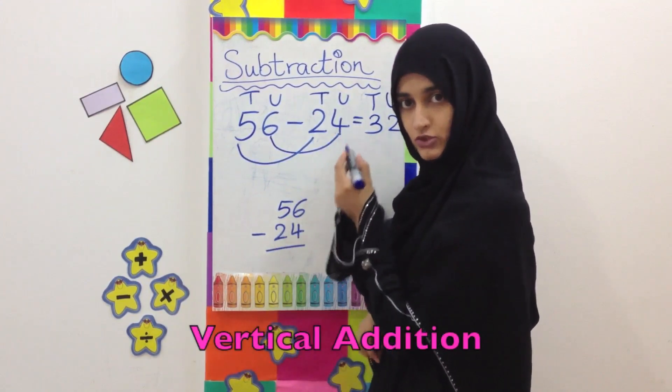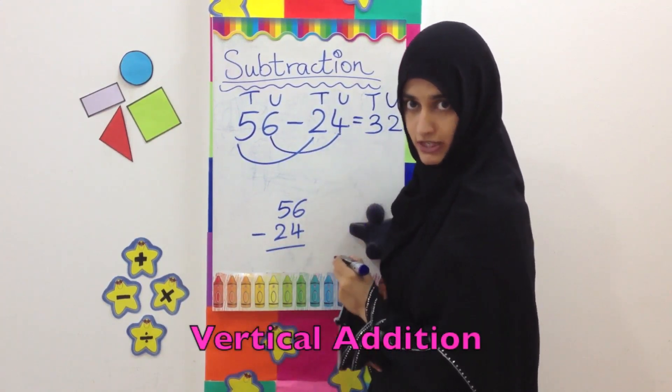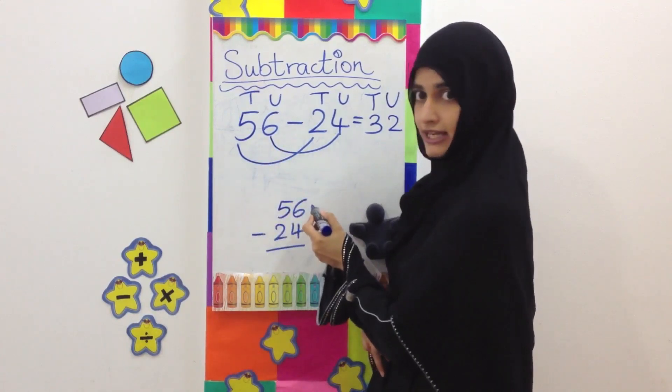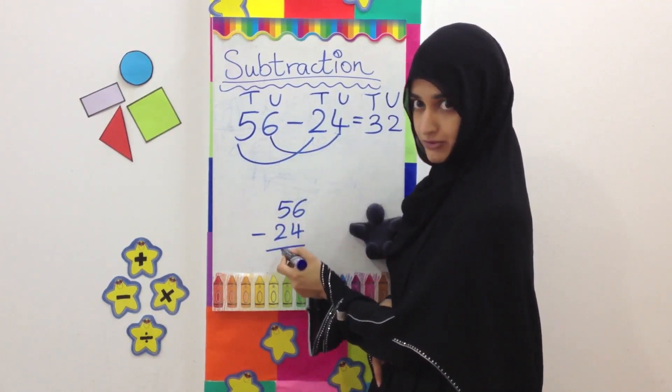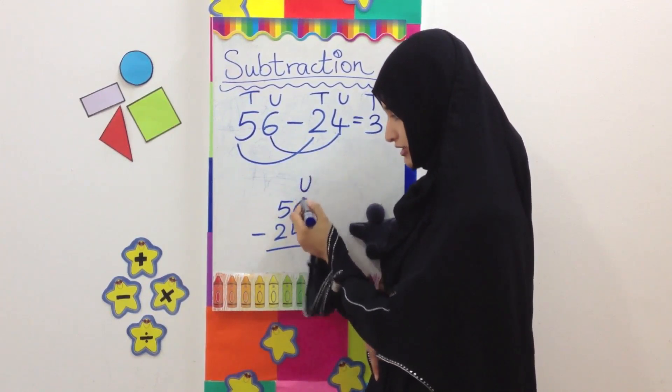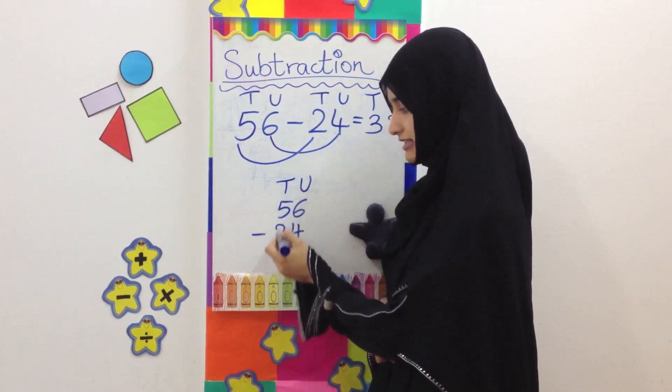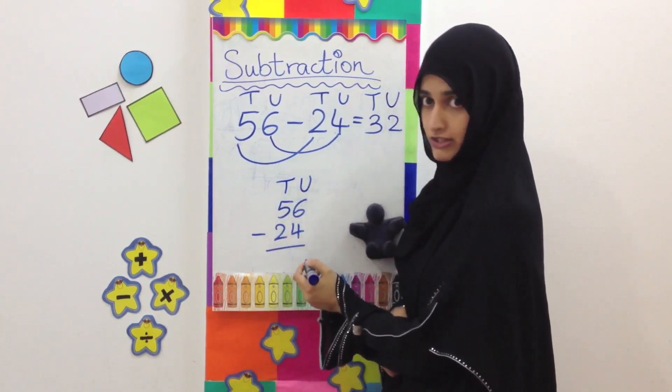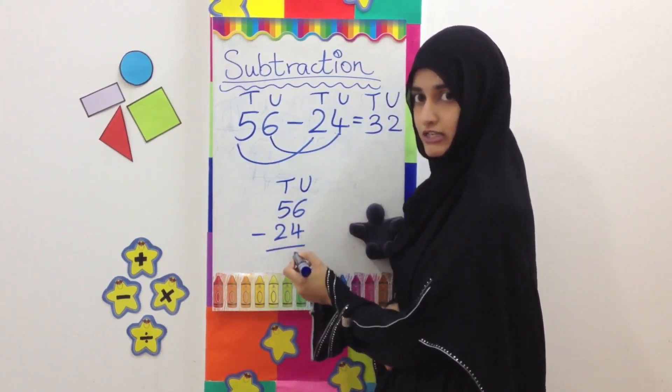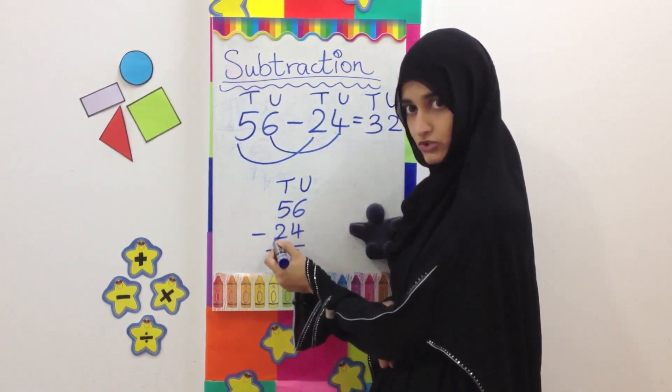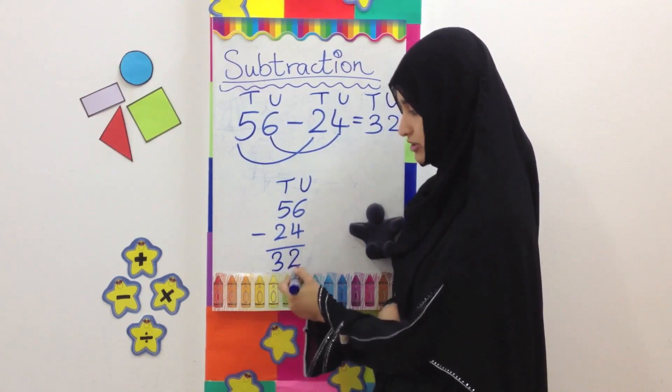The same question we can solve vertically. In vertical subtraction, we write the first number, which is the bigger number, on the top, and then the other number goes at the bottom. Make sure you are writing the units in one line vertically and the tens in one line. We solve the units first. 6 minus 4 equals 2. 5 minus 2 equals 3. Answer is 32.